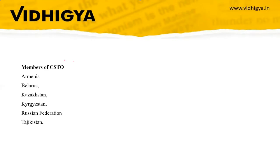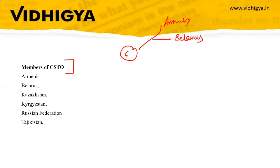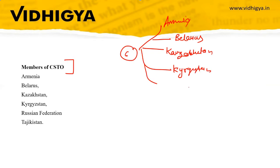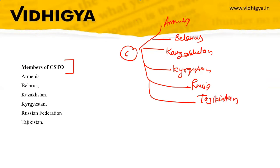The members of CSTO — there are six members. First is Armenia. Second is Belarus. Third is Kazakhstan. Fourth is Kyrgyzstan. Fifth is Russia. Sixth is Tajikistan. You have to remember these six countries.